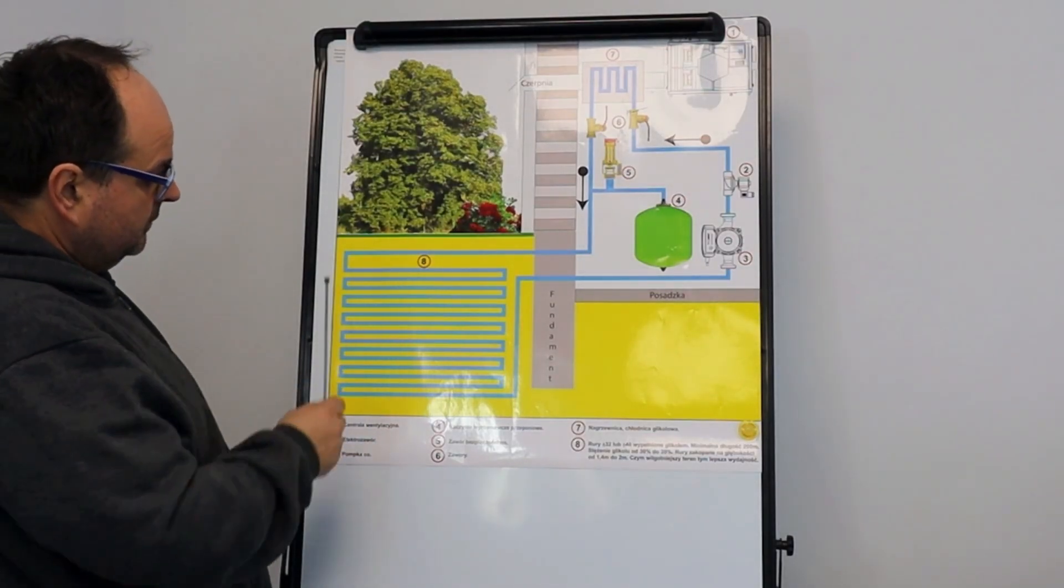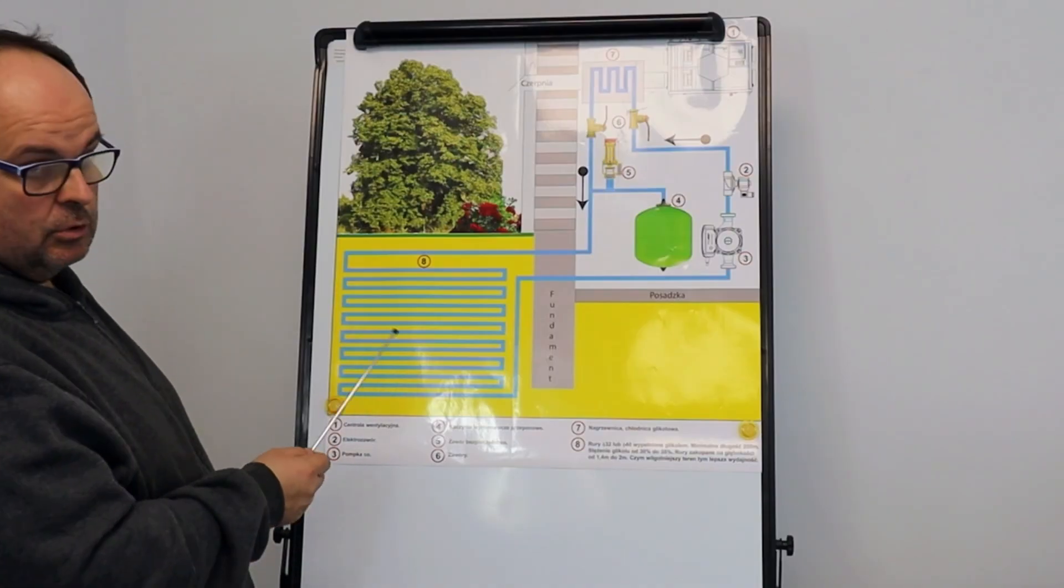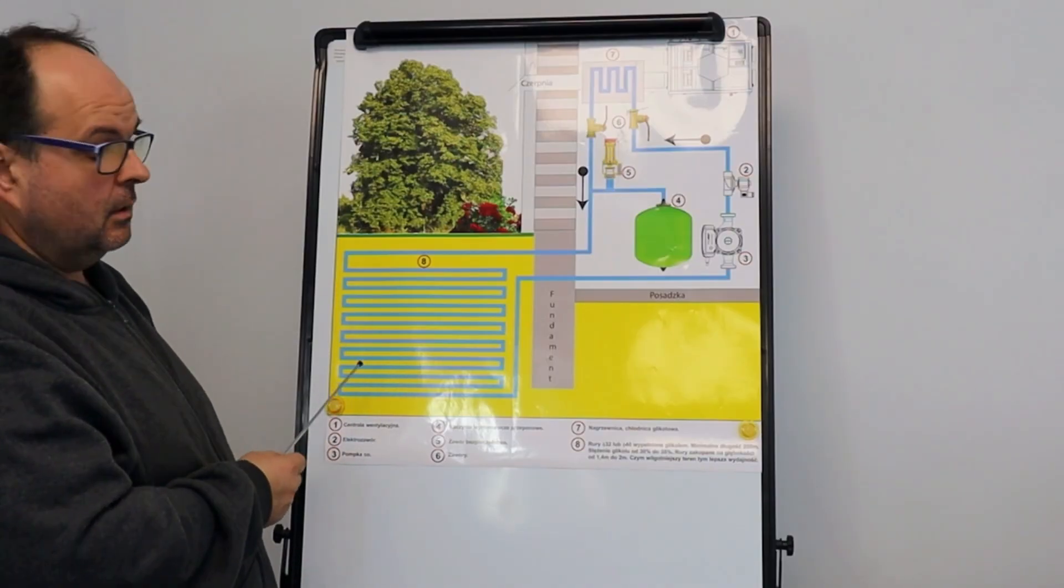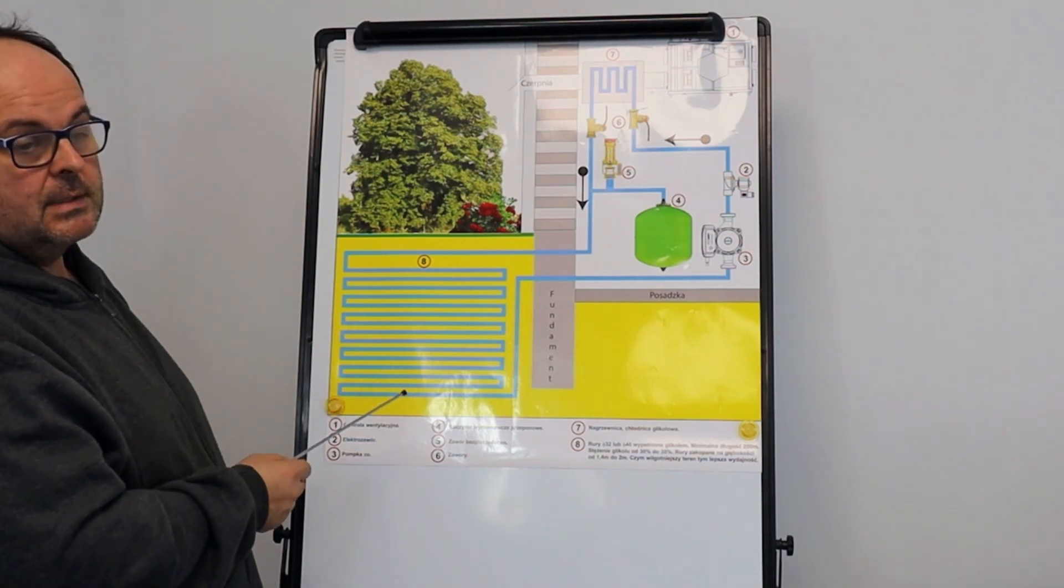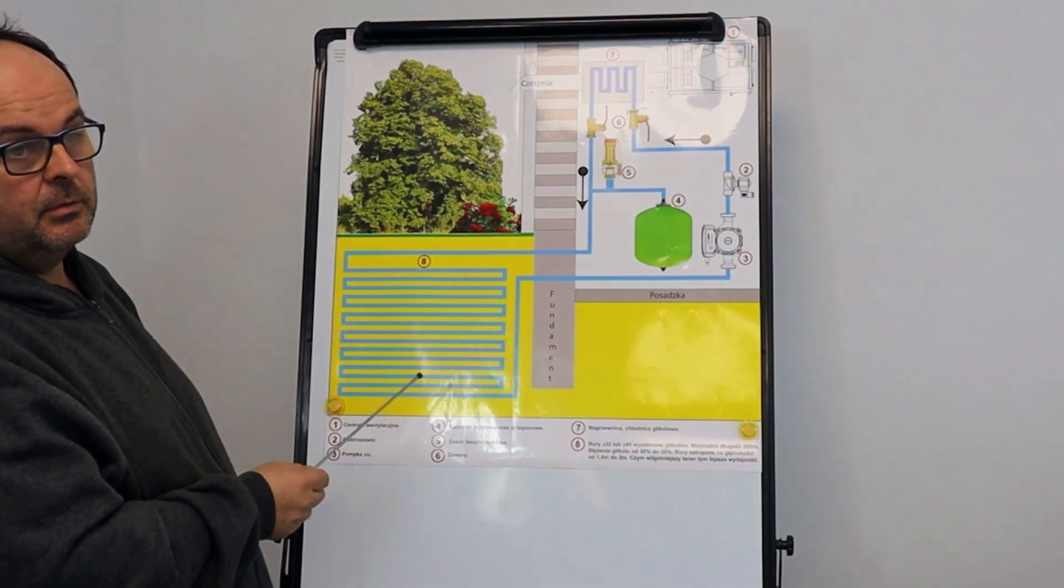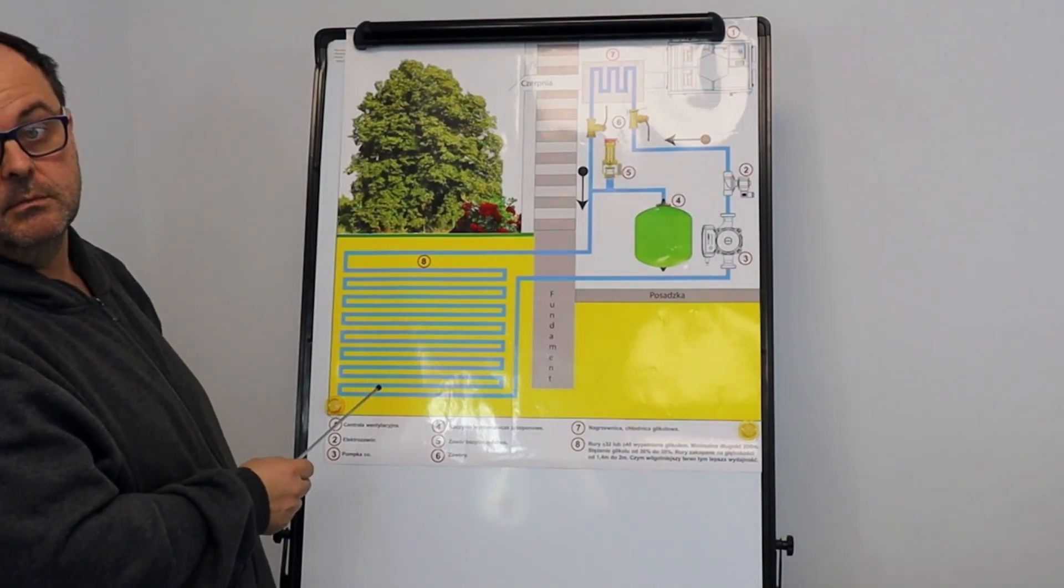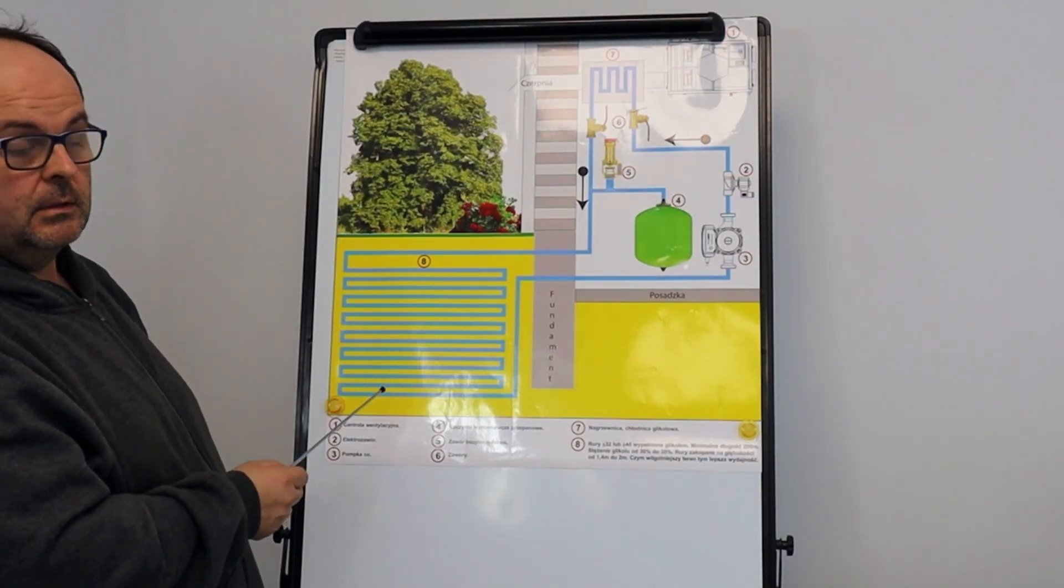But remember that with the glycol exchanger power, let's say at 200 meters of those tubes, depends on the environment, but on average we achieve two, two and a half kilowatts. With a regular air system where air flows through these tubes, we get one kilowatt more.